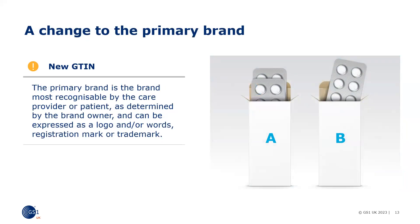Primary brand is the brand most recognised by the care provider or patient, as determined by the brand owner, and can be expressed as a logo and or words, registration mark or trademark. A change to the primary brand that appears on the trade item requires assignment of a new GTIN, and all higher levels of the packaging hierarchy impacted shall have a new GTIN assigned. For products where an agreement exists between the brand owner and the party identified on the label as the distributor, the brand owner remains responsible for GTIN assignment and therefore no new GTIN is necessary when a distributed-by party identification is added to the label. The distributed-by party identification must not include any registration marks or trademarks and must be made in plain text only.